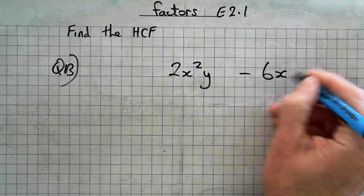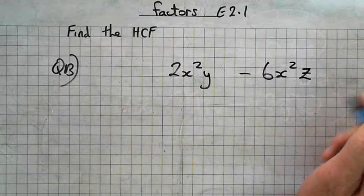3x squared times 1 is 3x squared. 2. And bring down the sign here. This sign comes down here. 2y. That's it. Easy enough? Yeah. Alright.